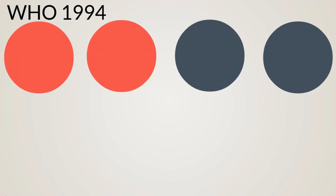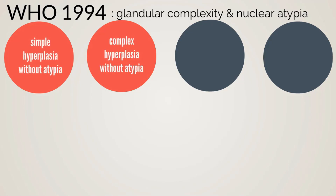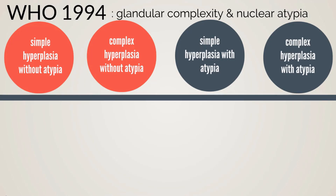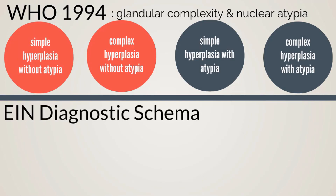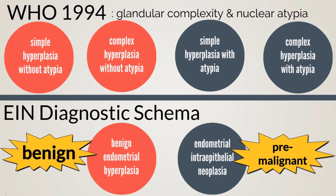Traditionally, the WHO 1994 schema broke down pre-malignant lesions into four categories based on glandular complexity and nuclear atypia: simple hyperplasia without atypia, complex hyperplasia without atypia, simple hyperplasia with atypia, and complex hyperplasia with atypia. More recently, ACOG has recommended using the endometrial intraepithelial neoplasia (EIN) diagnostic schema, which classifies lesions as either benign endometrial hyperplasia or endometrial intraepithelial neoplasia. This shift distinguishes between benign versus pre-malignant lesions and classifies them in a way that informs treatment decisions.